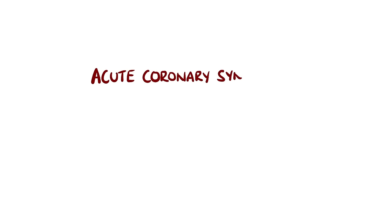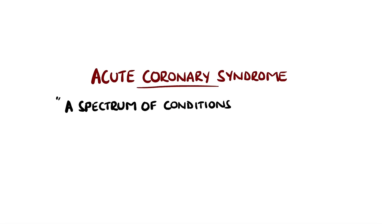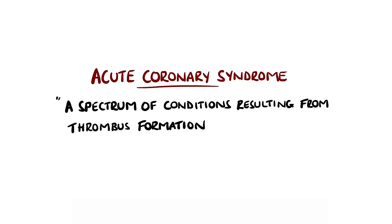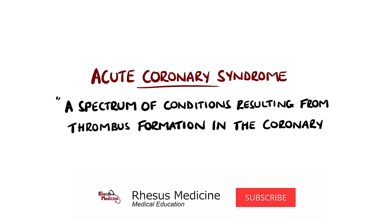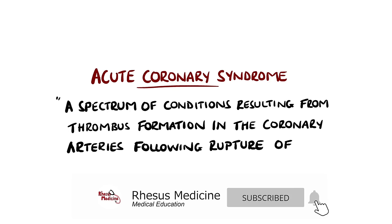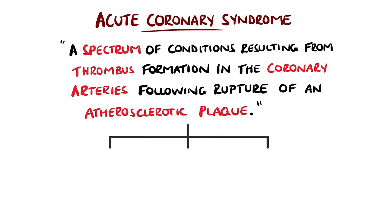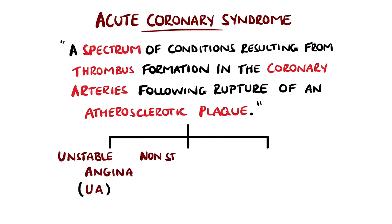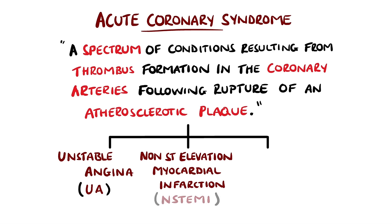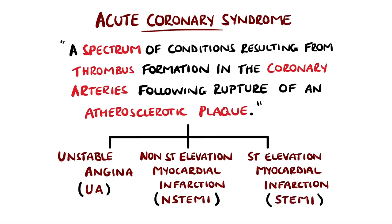Acute coronary syndrome is a spectrum of conditions resulting from the formation of a thrombus in the coronary arteries following rupture of an atherosclerotic plaque. They include unstable angina, non-ST elevation myocardial infarction, and ST elevation myocardial infarction.